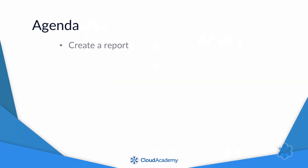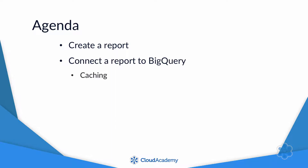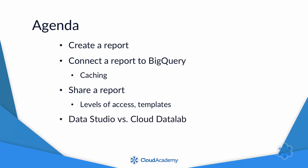In this course, we'll start by diving right in and creating a report. Next, I'll show you how to connect a report to a dataset in Big Query. In the process, you'll learn about caching. Then we'll go over how to share a report, give different levels of access, and use templates. And finally, I'll explain the differences between Data Studio and Cloud Datalab, another Google tool that can be used for data visualization.